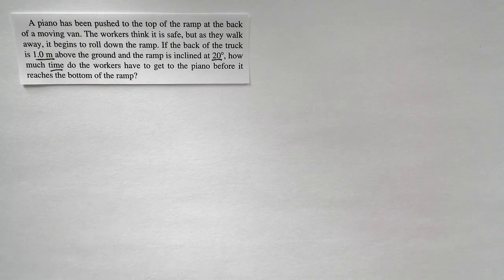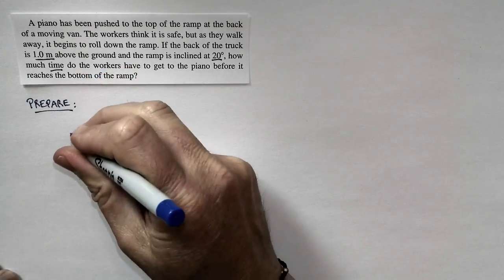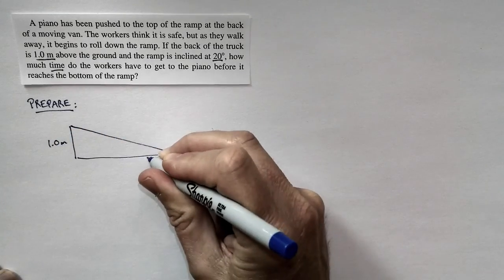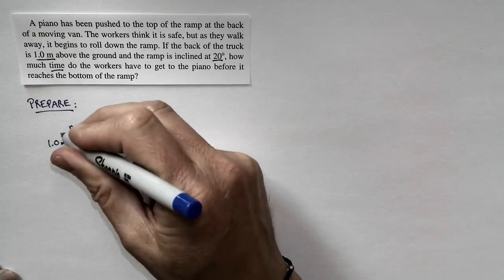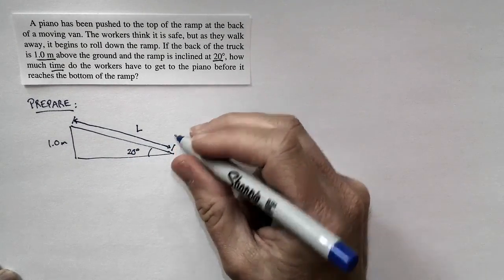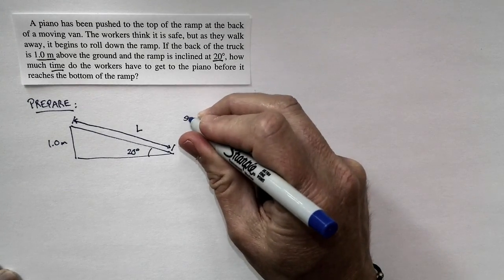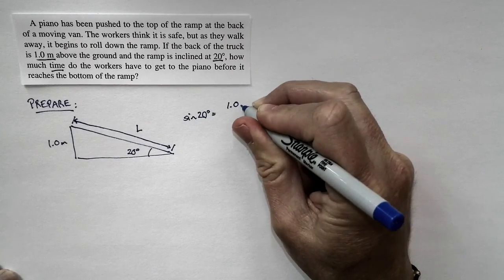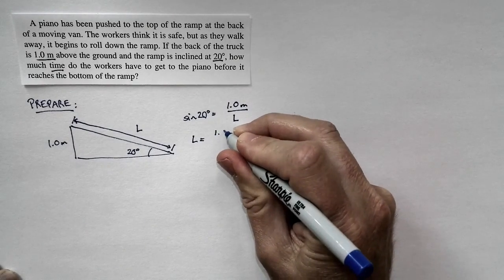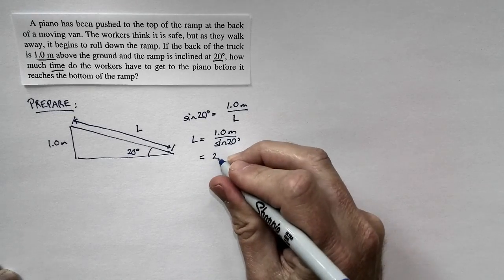This is an object on a ramp problem. To set it up, we need to specify the ramp. We're told the ramp top is one meter above the ground, so that distance is 1.0 meters. We're also told the ramp is at a 20 degree angle. What we really need to know is how long the ramp is — this is the distance the piano is going to roll. We know that the sine of 20 degrees equals the opposite side of the triangle divided by the hypotenuse, so sine of 20 degrees equals 1 meter divided by L. Therefore, L equals 1.0 meters divided by the sine of 20 degrees, which gives us a distance of 2.93 meters.